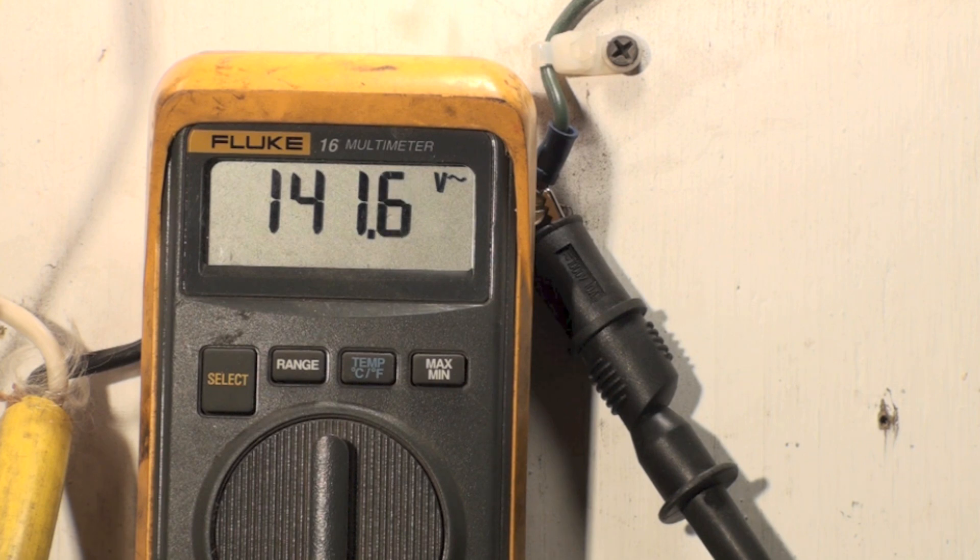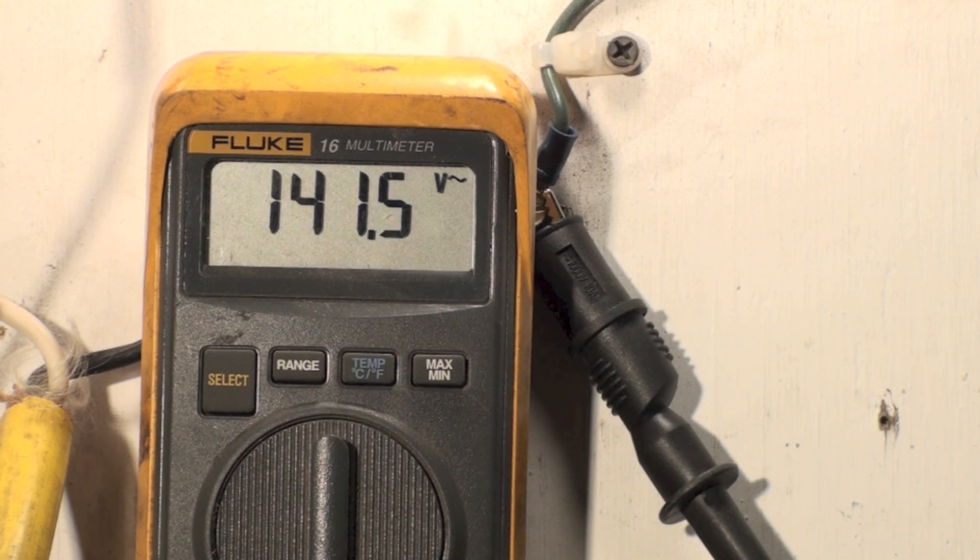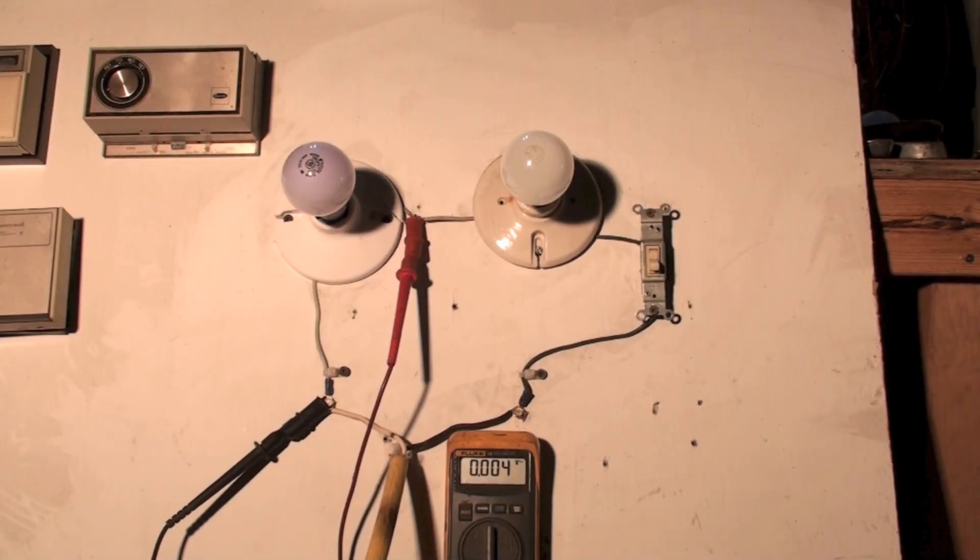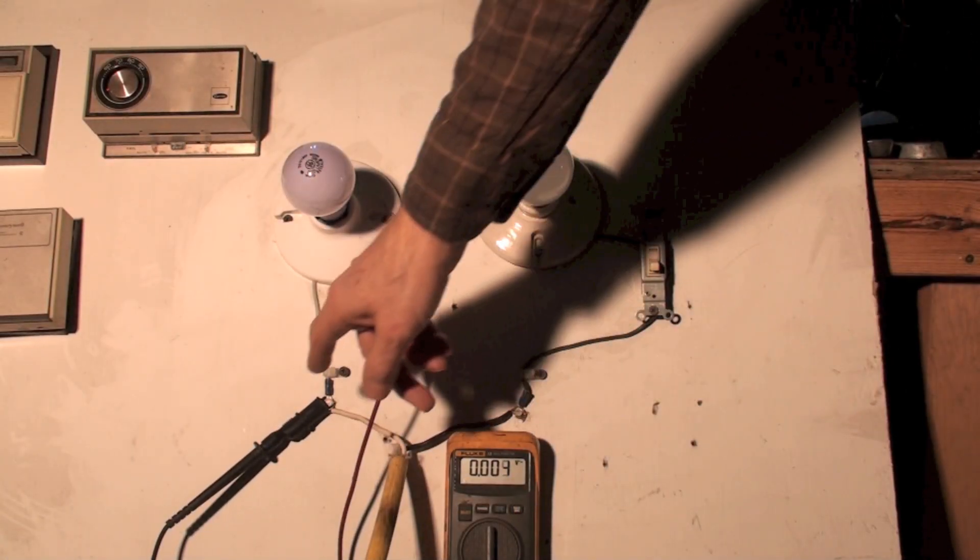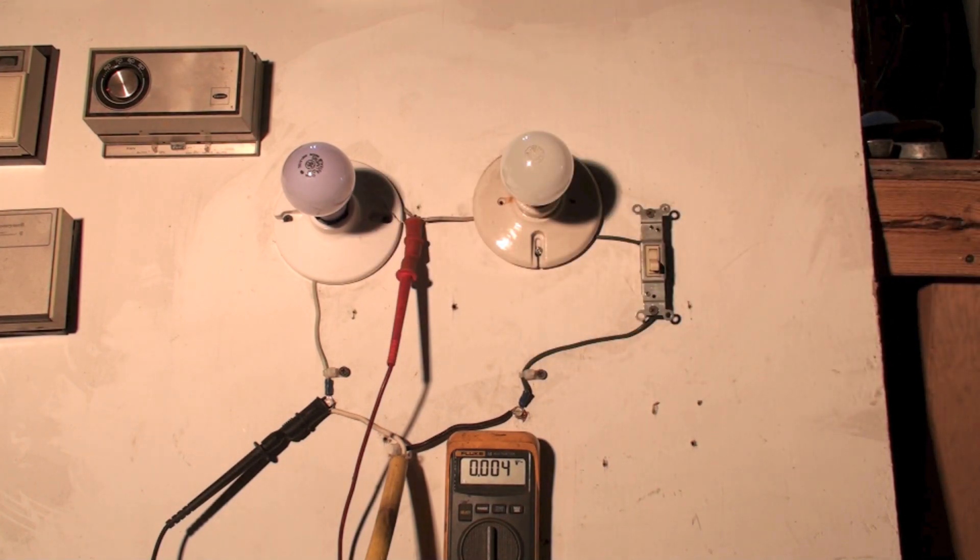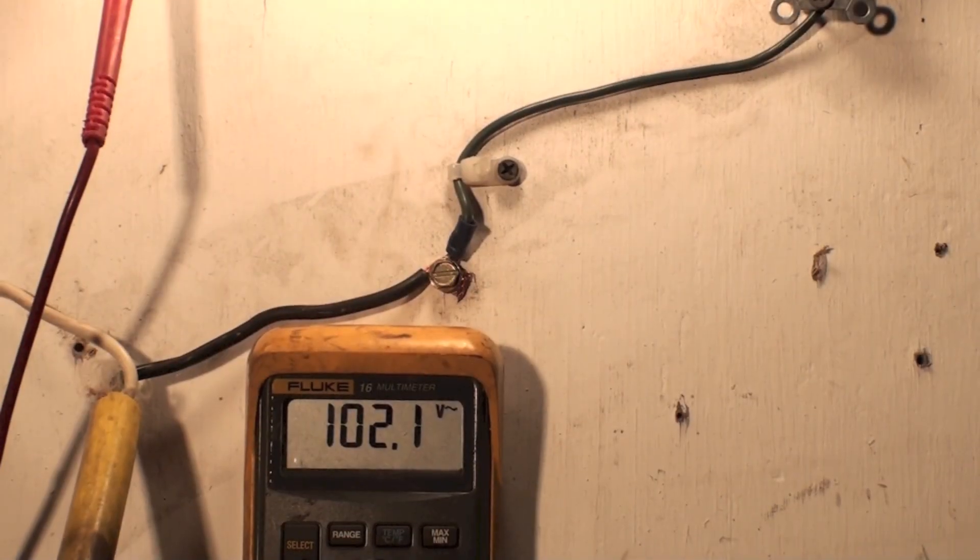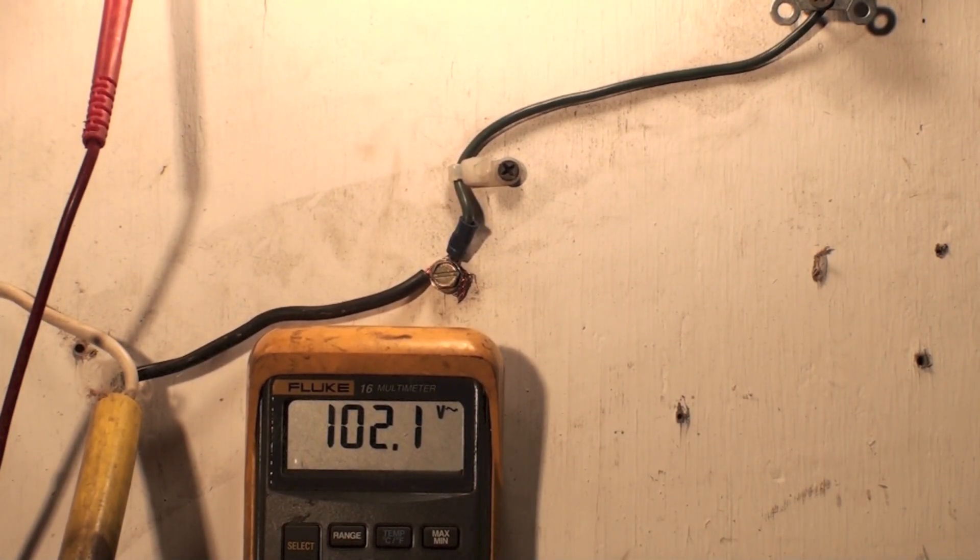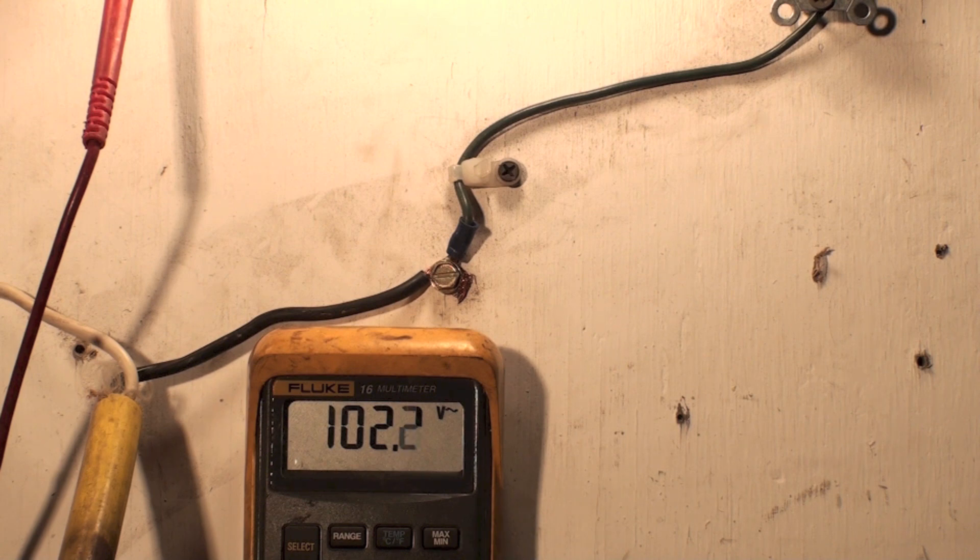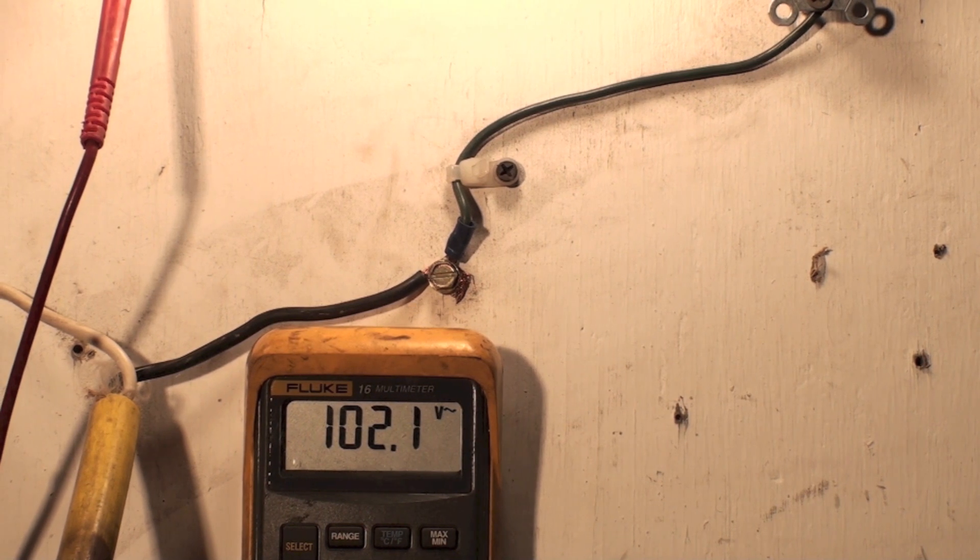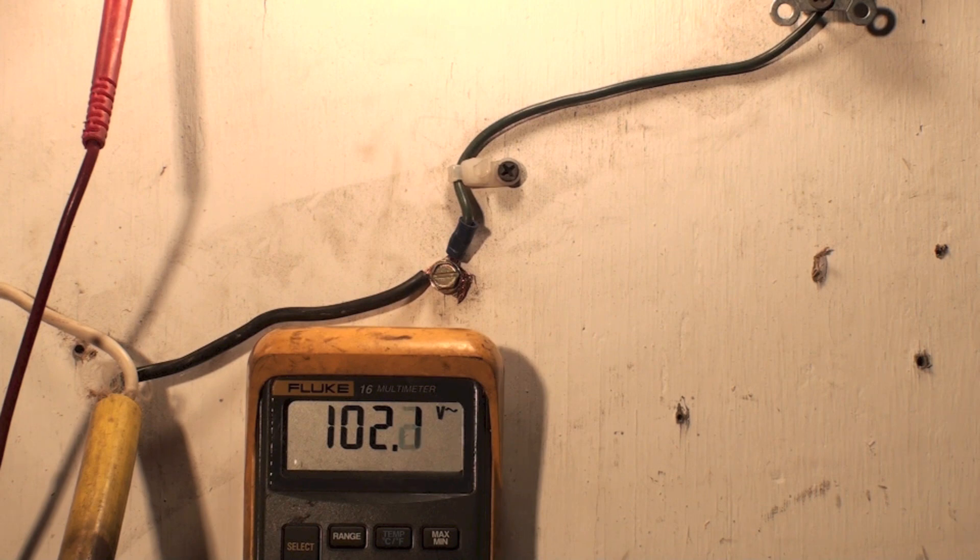Now let's switch and check what the voltage to the other light bulb, the 75 watt light bulb is. We're set up now with our probes across the 75 watt bulb. Let's turn it on and let's check our voltage. Now we're at 102, so I'm at 102 on the 75 and 141 on the 60.